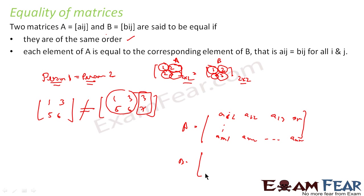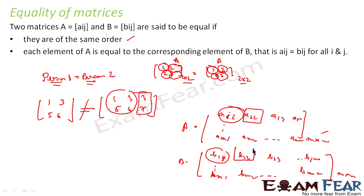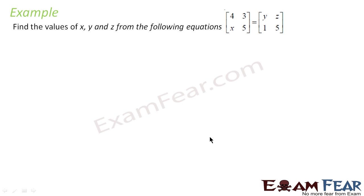And there is another matrix B which has elements b₁₁, b₁₂, b₁₃ ... b₁ₙ, down to bₘ₁, bₘ₂, bₘₙ. If A equals B, the order is the same — both are m×n — and the corresponding elements must be equal: a₁₁ = b₁₁, a₁₂ = b₁₂, a₁₃ = b₁₃, and so on for all elements.